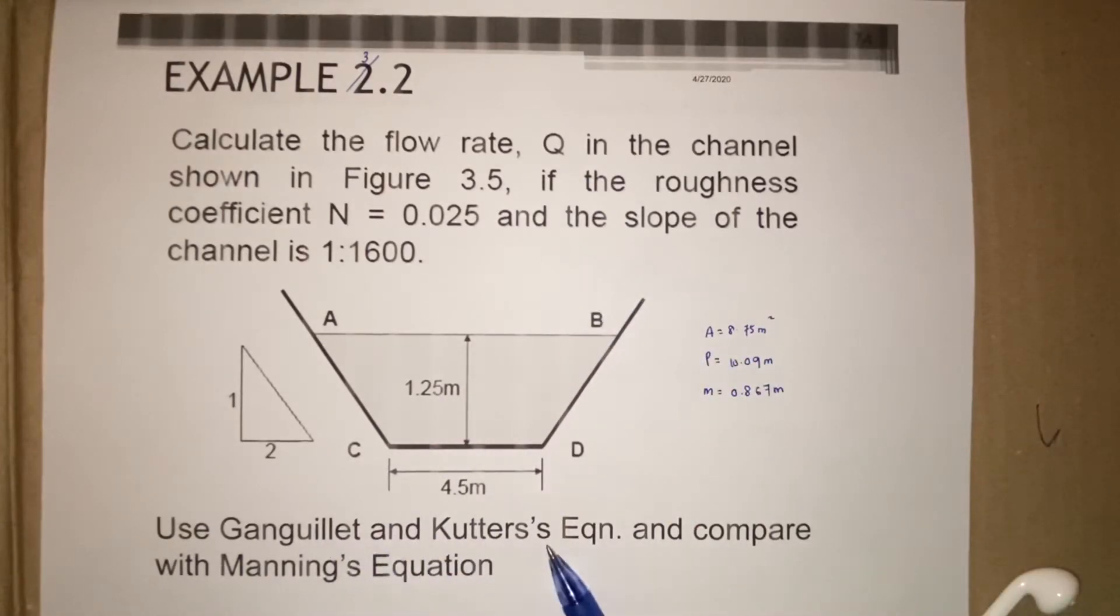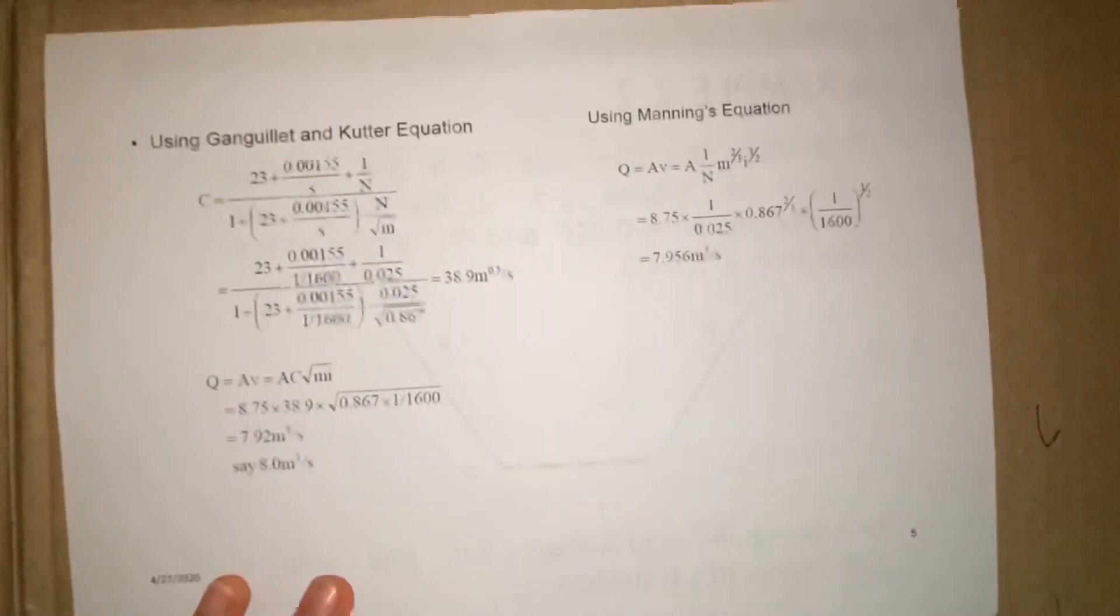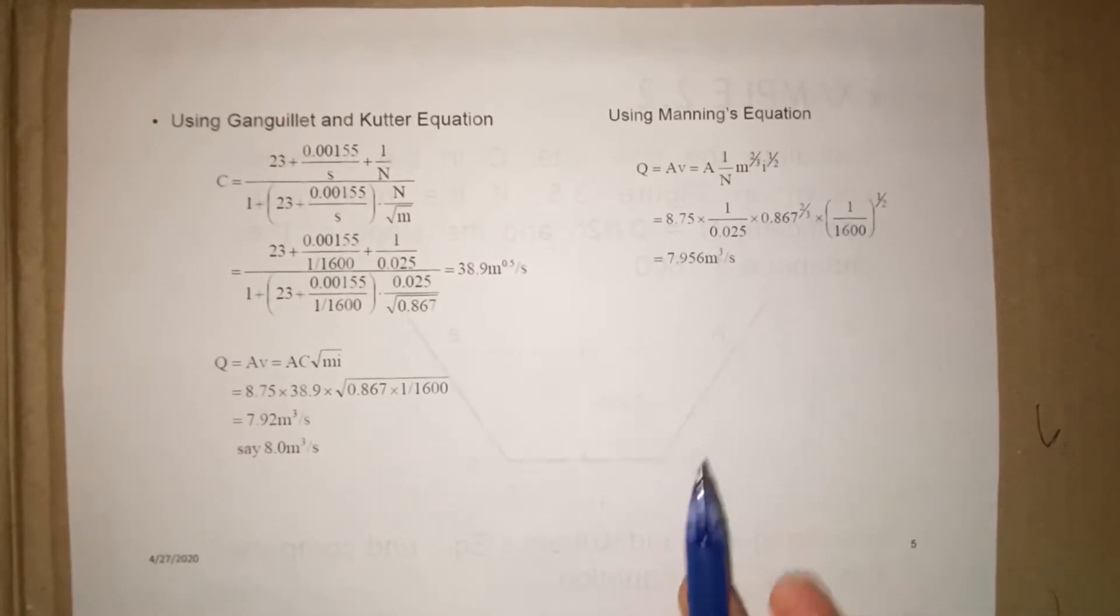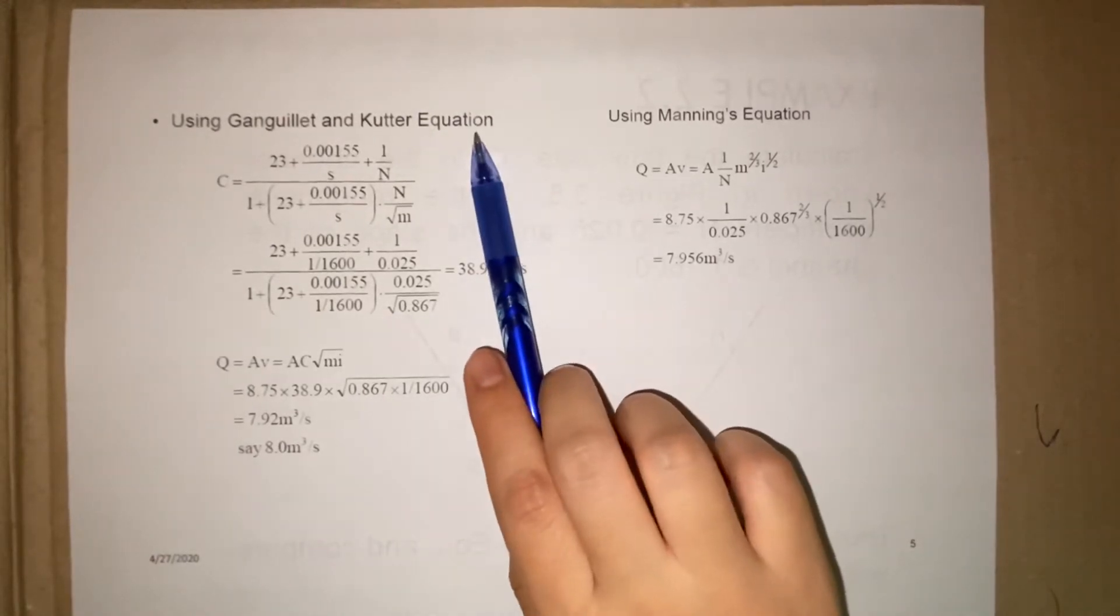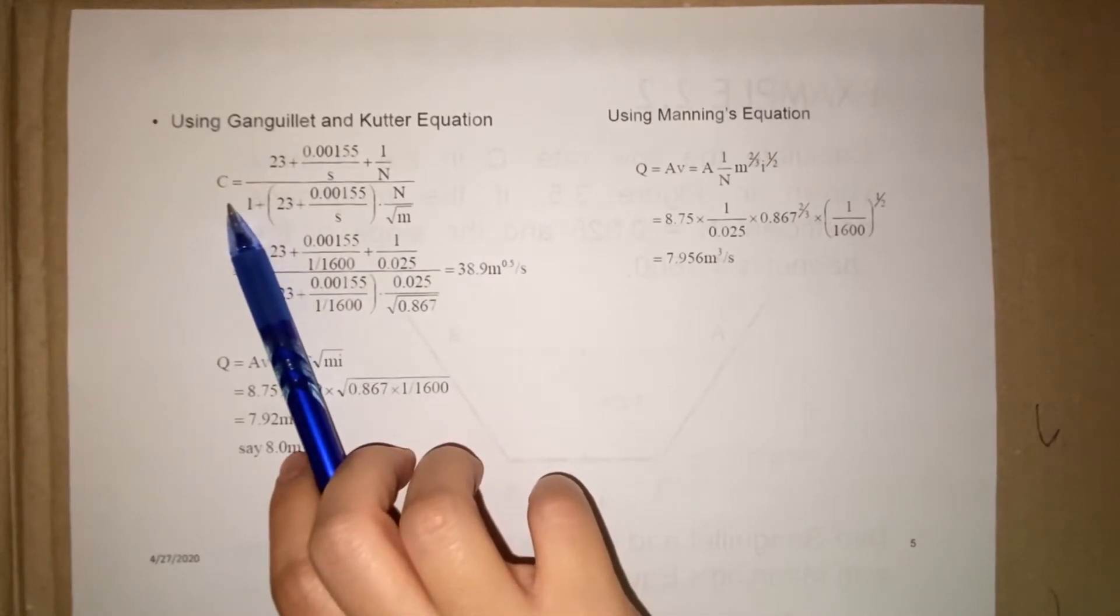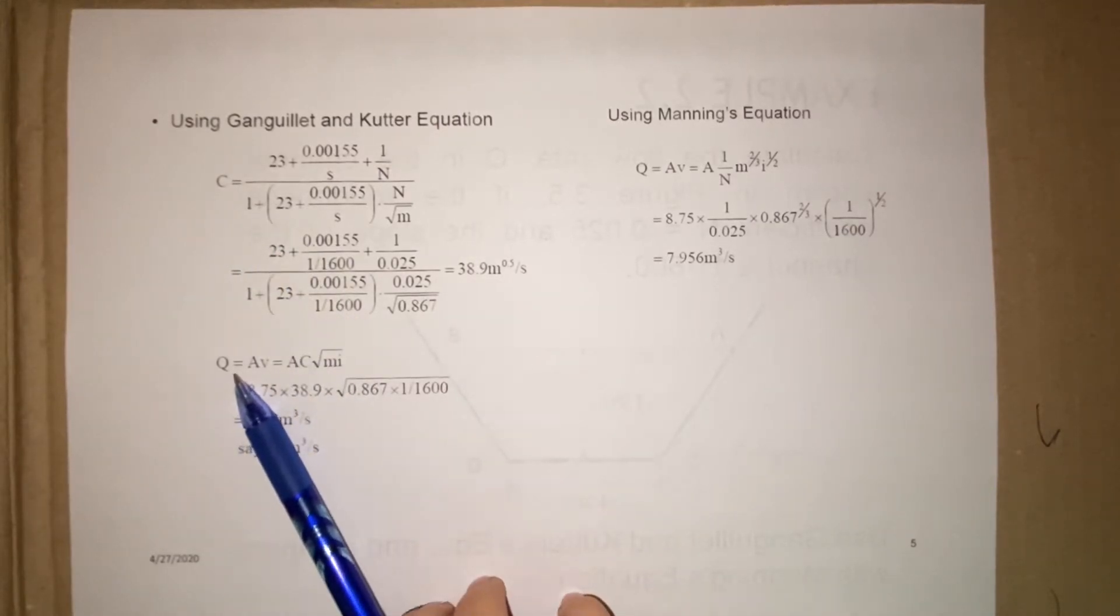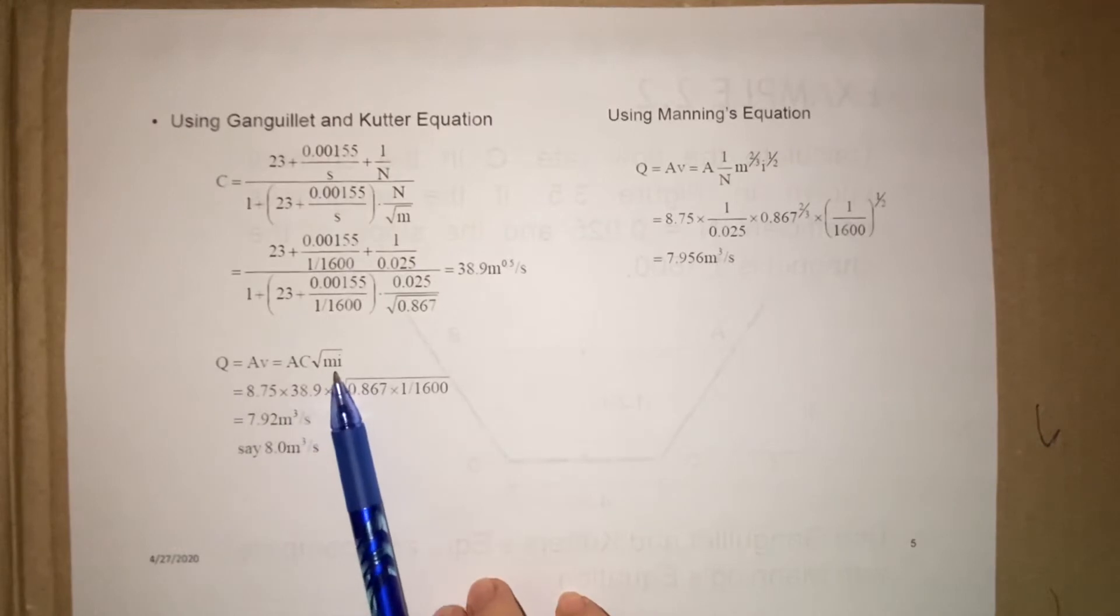So we are going to calculate for Q using two equations: Ganguillet and Kutter's and Manning's equation. Okay, so by using the Ganguillet and Kutter's equation, we calculate C, the coefficient of Ganguillet and Kutter's.